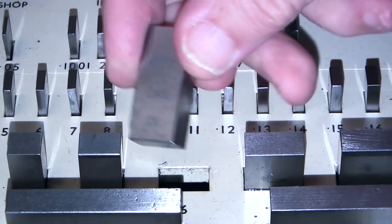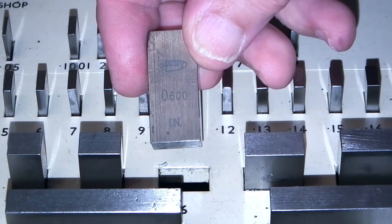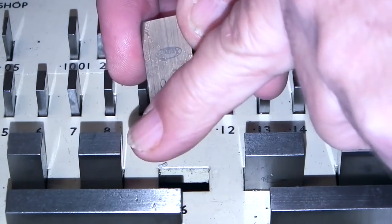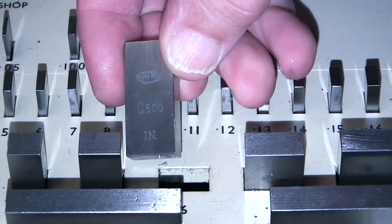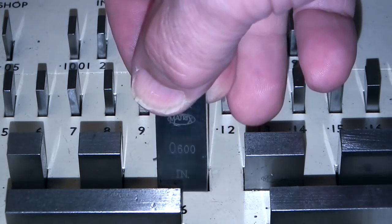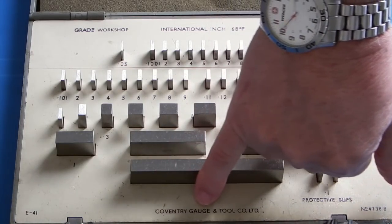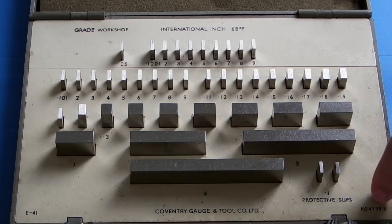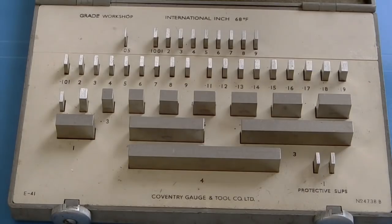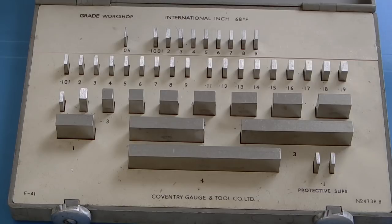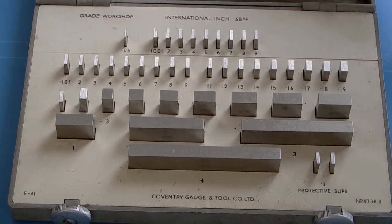So you can see it's got 0.6 inch, it says Matrix on there. These have got here Coventry Gauge and Tool Company and the number here of the set. I've had this off to see if there was a calibration certificate under there or a date or anything. There's nothing on them to say how old they are.